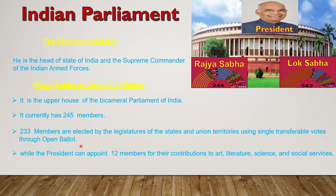This is also a very important question: How are the members of Rajya Sabha elected? The members of Rajya Sabha are elected by the members of legislative bodies of states and union territories. 12 members of Rajya Sabha are nominated by the President of India for their contributions to art, literature, science, and social services. Rajya Sabha is a permanent body because it is not subject to dissolution. In Rajya Sabha, after every two years, one-third members resign and the vacant posts are filled with new members.